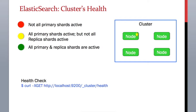The other status is yellow, which means your primary shards are active but not all your replica shards are active. This means that some of your primary shards do not have any backups. So if a primary fails, you will have an issue such as losing the data.